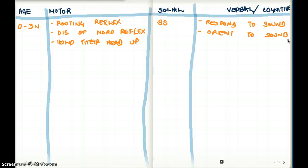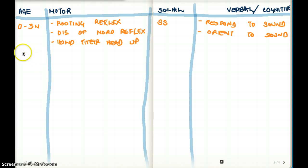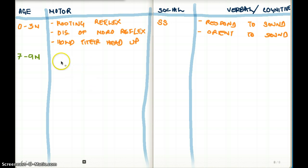So those are the things that happen between zero to three months. Nothing really major is going to happen between four, five, and six months. The next milestone we should focus on is from seven to nine months. Motor-wise, they will be able to sit up alone — you don't have to prop them — from seven to nine months.